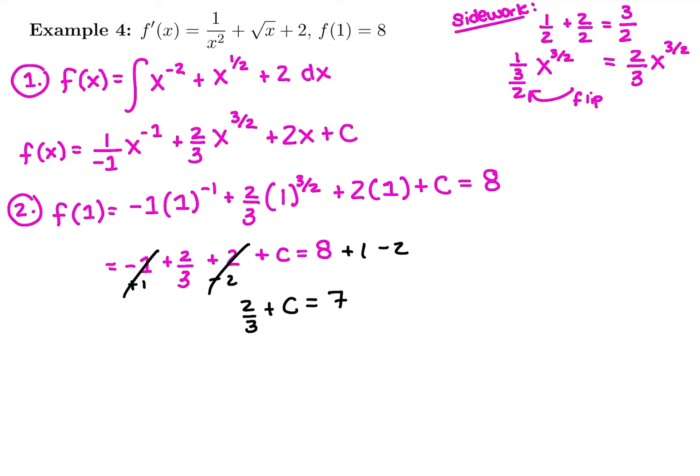So then lastly, I'm going to work with this fraction here. So I'm going to subtract 2 thirds from both sides. So c is going to be, I need to write 7 as thirds. So 7 times 3 is going to be 21 over 3. So 7 is the same thing as 21 thirds, minus 2 thirds is going to give us 19 thirds.